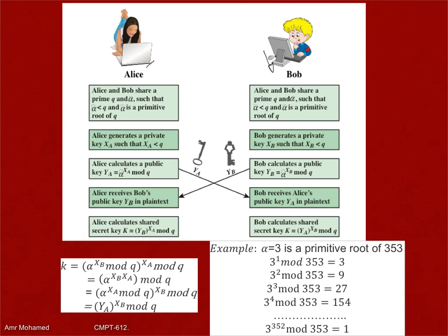Alpha, Q, and YA can all be sent over the common channel, because even if there is an eavesdropper who knows alpha and Q, they don't know XA. YA can also be shared over the channel. What is actually hidden is XA, the exponent. If anyone is listening, they have alpha, Q, and YA — but they cannot guess XA. This is the discrete logarithm.